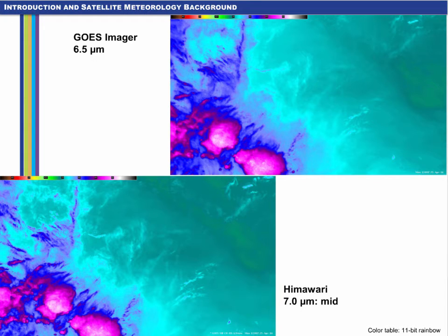Let's compare the current GOES-15 water vapor channel with one of the water vapor channels from Himawari near Hawaii. We cannot make a direct comparison since there is not a 6.5 micron channel on Himawari, so we choose 7.0 microns, which will have slightly warmer brightness temperatures since the weighting function peaks lower in altitude. Another complicating issue is that this is close to the limb for Himawari, particularly for the eastern edge of the scene, and the resolution of the imagery degrades near the limb. Despite these issues, a comparison shows the improved resolution of the Himawari imagery, particularly near convective clouds. This improvement in spatial and temporal resolution will also be apparent in GOES-R over the current GOES satellites.